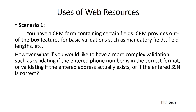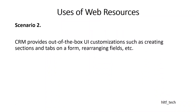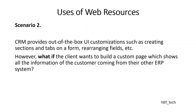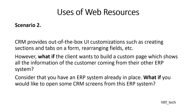Scenario two is that the default CRM provides out-of-the-box user interface customization such as creating sections and tabs on forms, rearranging fields, etc. In the on-premise form editor you can add different types of fields, tabs, columns, and rearrange sections. But what if the client wants to build a custom page which shows all the information of a customer coming from their other ERP system? Consider that you have an ERP system already in place and you would like to open some CRM screens from that ERP system. That is scenario two.